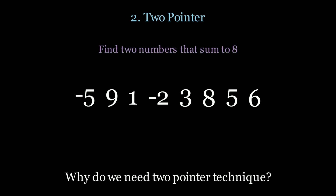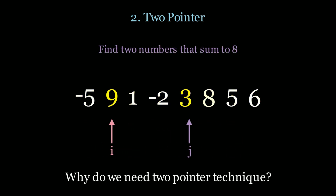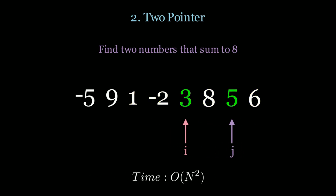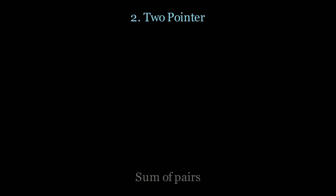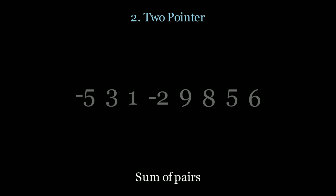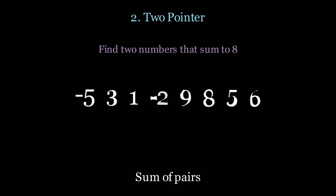So why do we need this pattern? Suppose we want to find two numbers that sum up to 8. Without this pattern we have to use a double for loop which is O(n²) time complexity until we find the pair that sums up to 8. Now let's take a look at how the two pointer technique could help us.